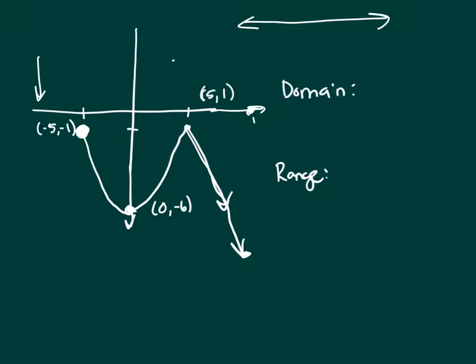And what is it when you keep going that way? Where is that? That's positive infinity. Your domain is negative 5 with a bracket. It's a bracket because you've got a closed circle there, and then positive infinity.